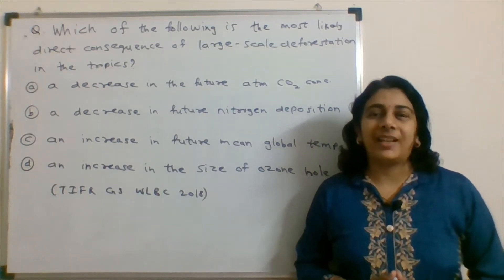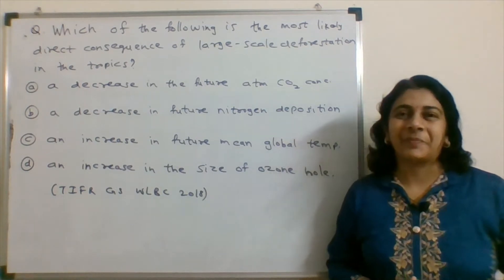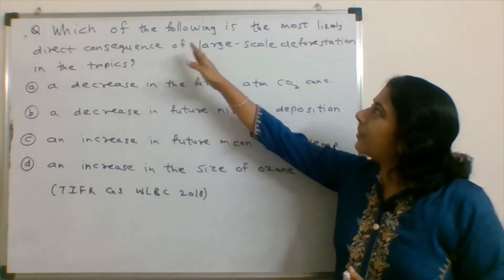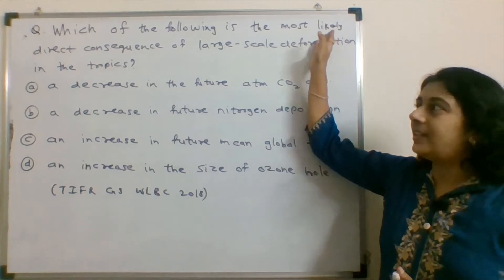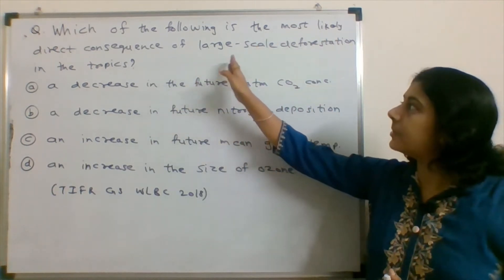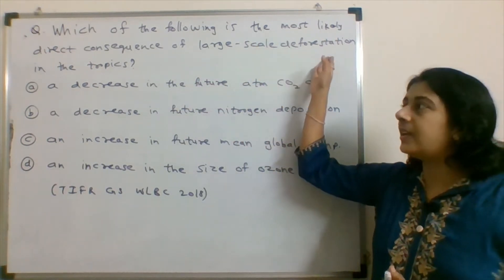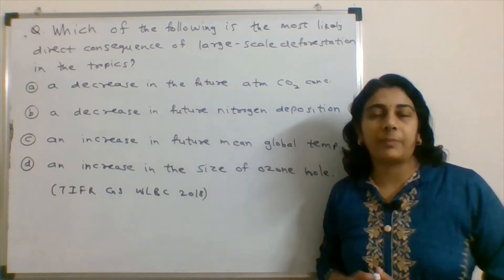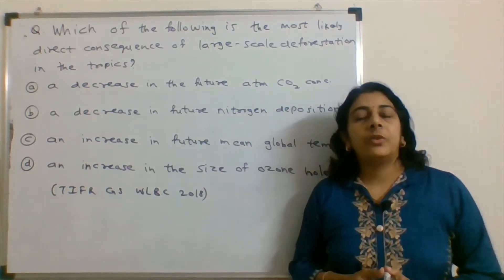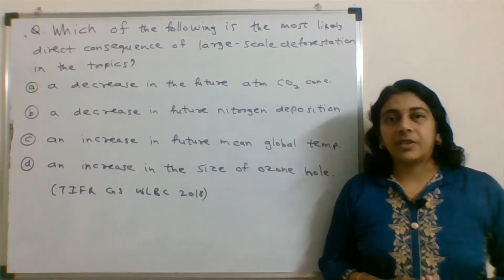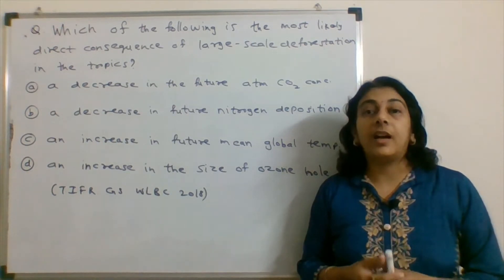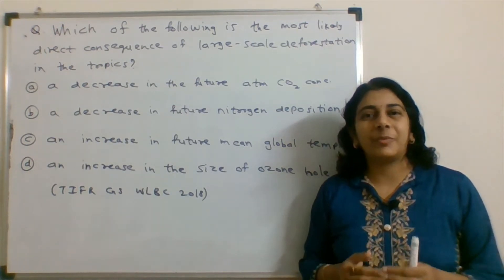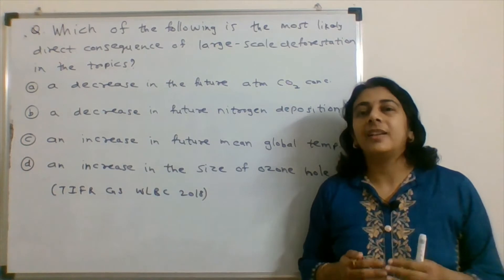This question is from the 2018 paper. Which of the following is the most likely direct consequence of large scale deforestation in the tropics?